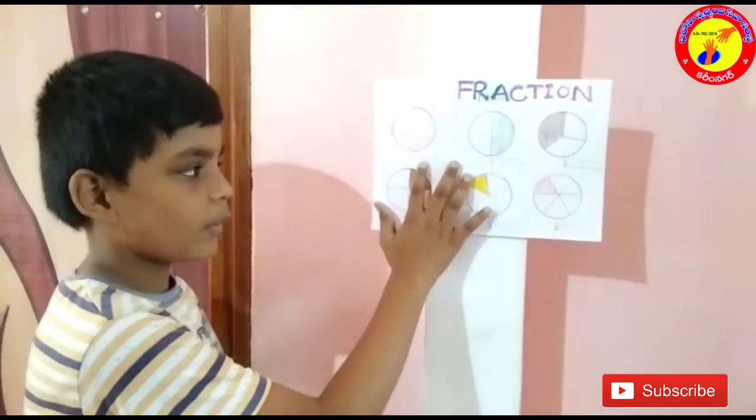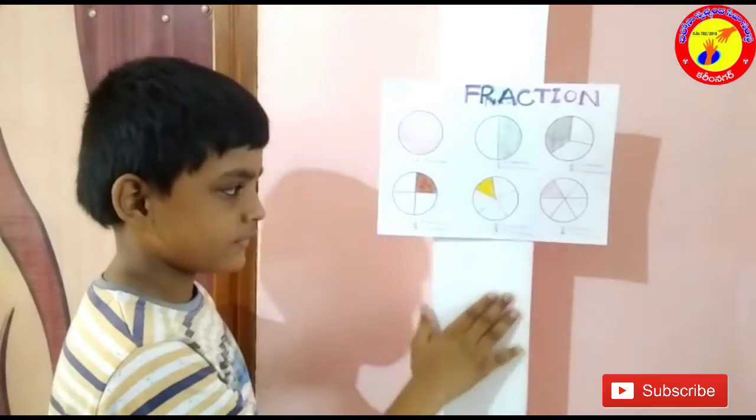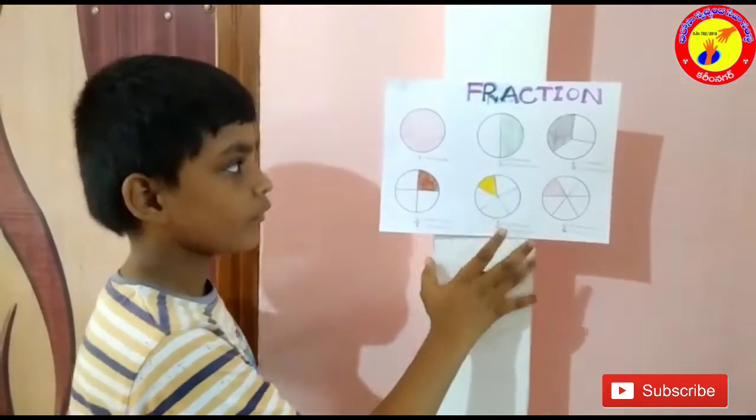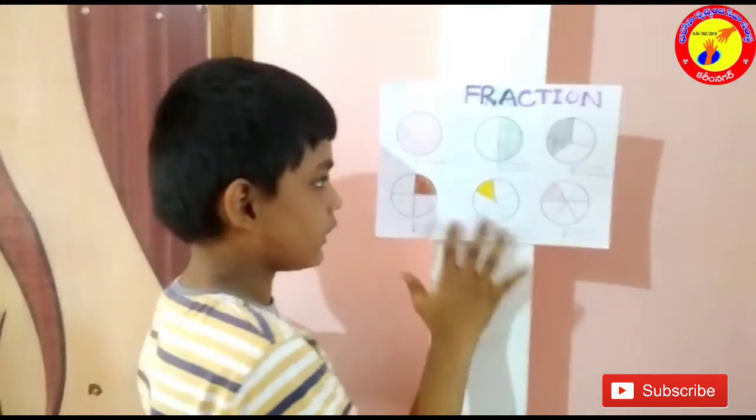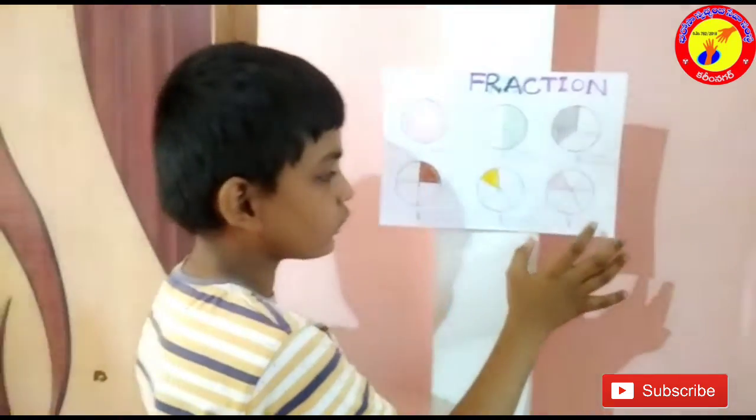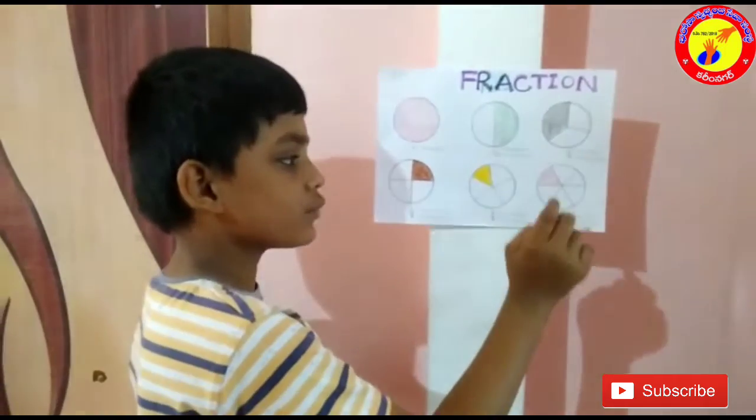If a whole part is divided into 5 equal parts, it is 1 by 5. If a whole part is divided into 6 equal parts, it is 1 by 6.